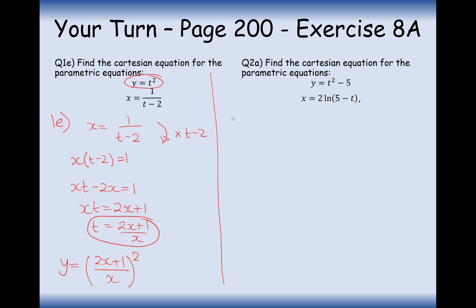Let's have a go at 2a now. Start with the x one. x equals 2 ln of 5 minus t. Let's divide through by 2 first. And now we can e both sides. e to the x over 2 equals 5 minus t. And then we can do a bit of rearranging. So, 5 minus e to the x over 2. That's the t equals equation.